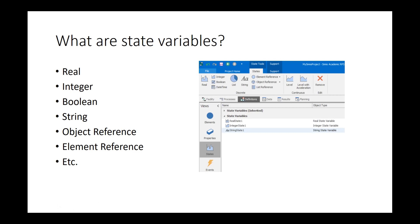There are different types of state variables. There's one state variable where you could have different data types: real value, integer value, boolean, string. You can also make state variables an object reference, like different servers, vehicles, workers — any object in Simio can also be assigned to a state variable.